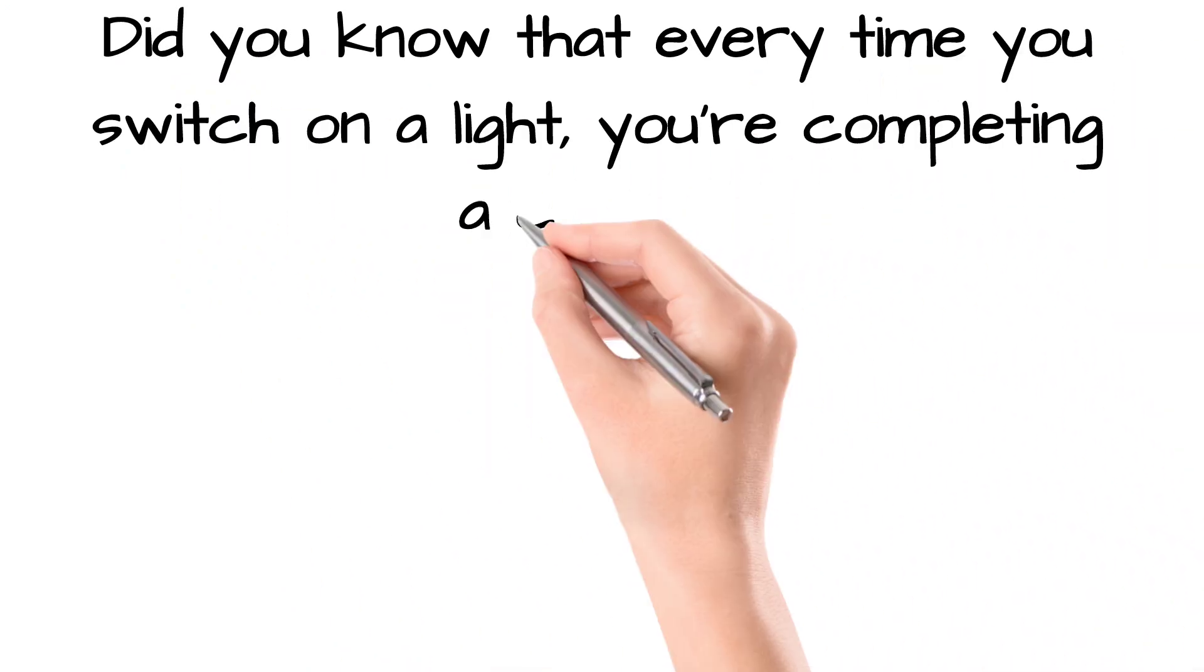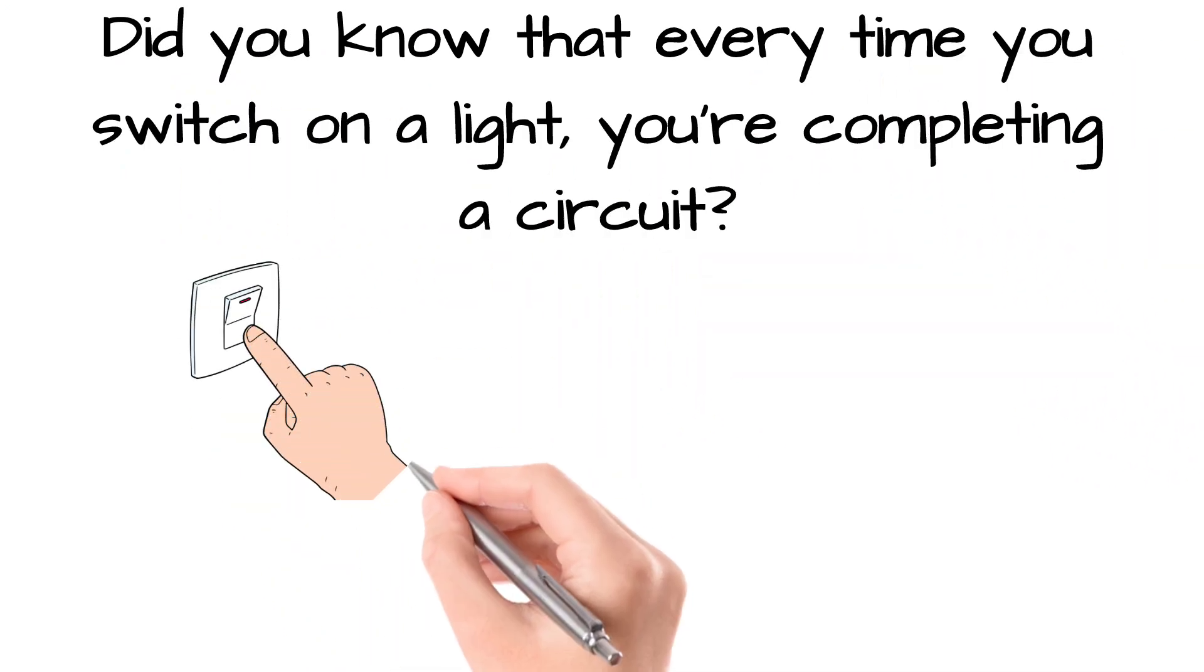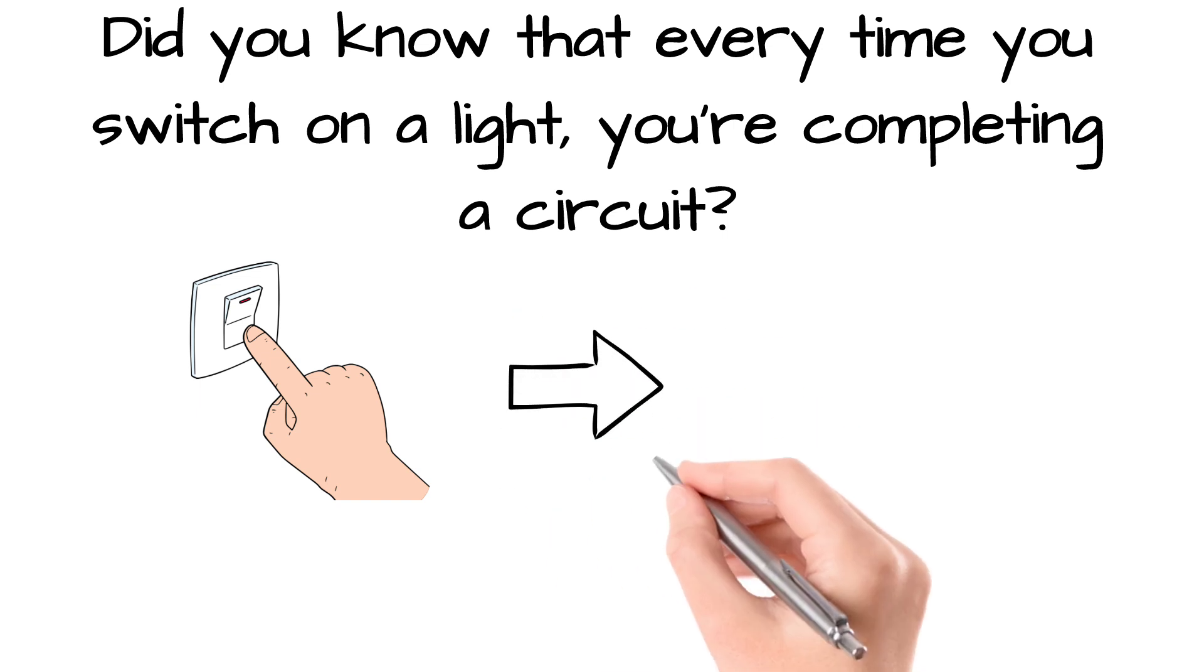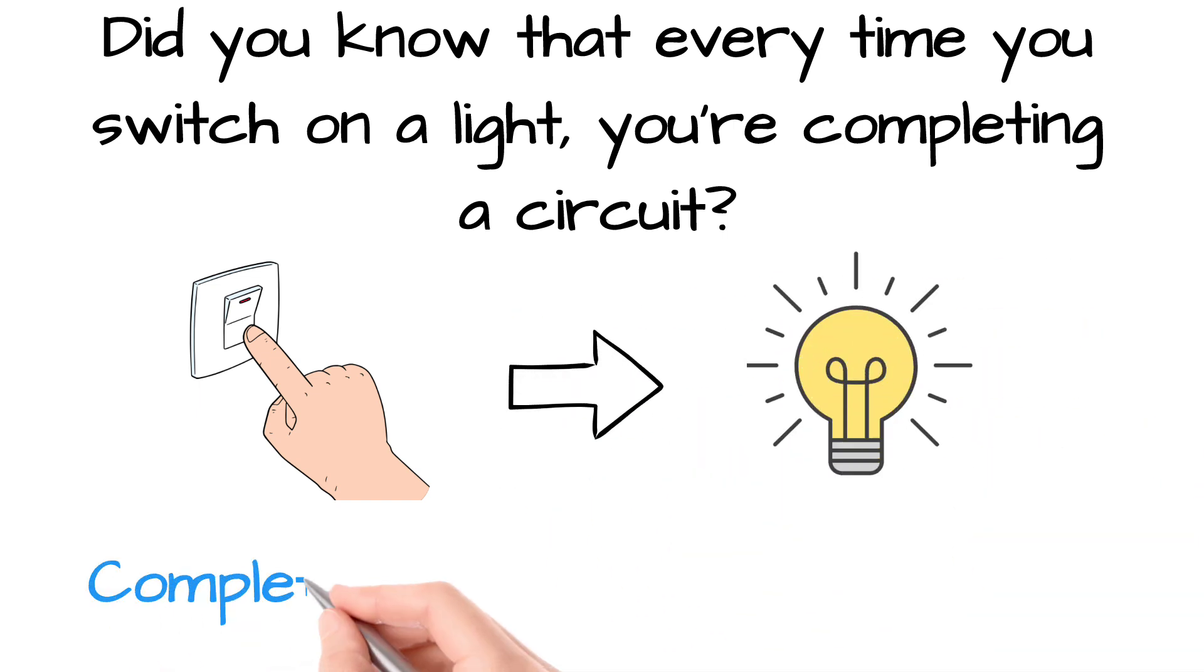Did you know that each time you flick on a light switch, you're actually completing a circuit? Electricity flows through a closed path, allowing energy to travel from the power source to the bulb, lighting up your room in seconds.